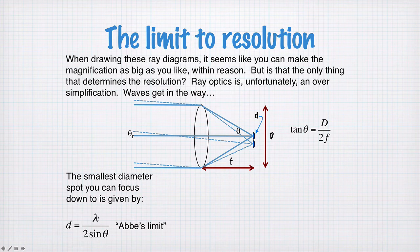And this d is determined by the wavelength and the size of the lens. Because if you make the lens bigger, you make theta bigger. So smaller wavelength means d is smaller. Bigger angle means d is smaller.